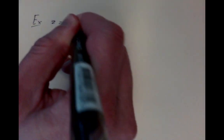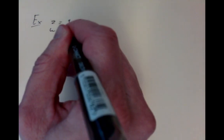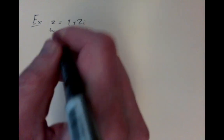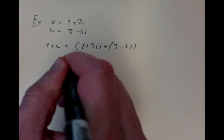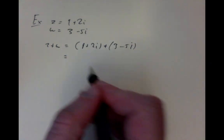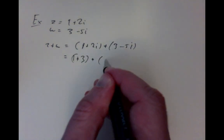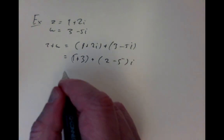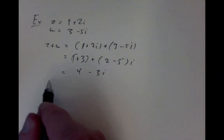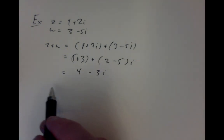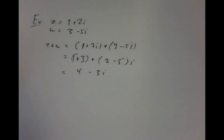Let's do some examples. If z = 1 + 2i and w = 3 − 5i, then z + w = (1+2i) + (3−5i) = (1+3) + (2−5)i = 4 − 3i. Similarly, you can work out z − w and z·w. Division is more complicated, which is why we haven't done it yet.